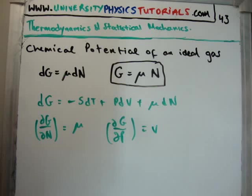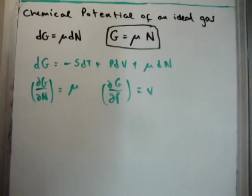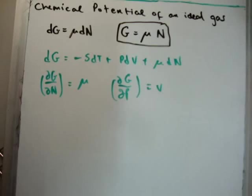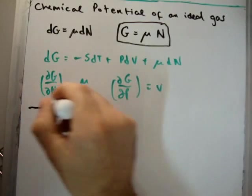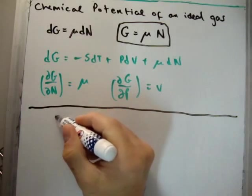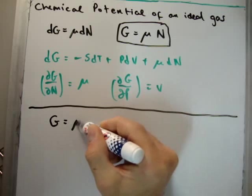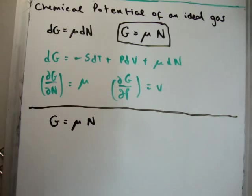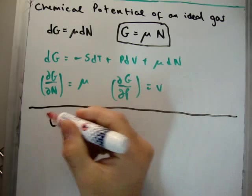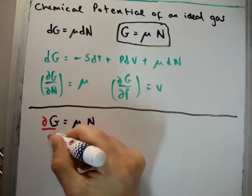Going back to our relationship between the Gibbs free energy and the chemical potential, or the chemical potential's role as the Gibbs free energy per particle, we saw that G is equal to μ times N. So what we're going to do now is take the partials with respect to P. We're going to get (∂G/∂P).